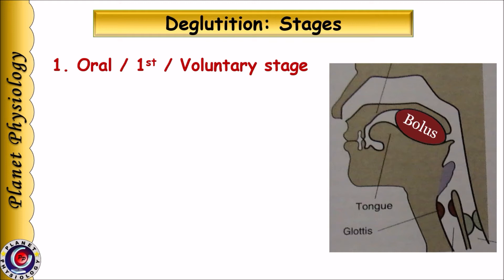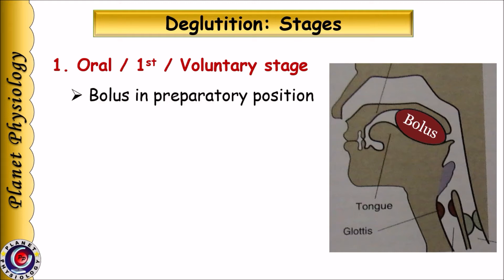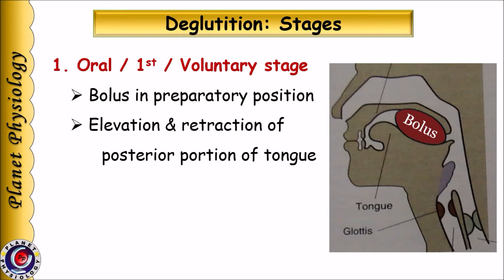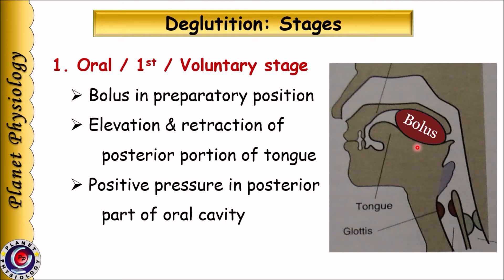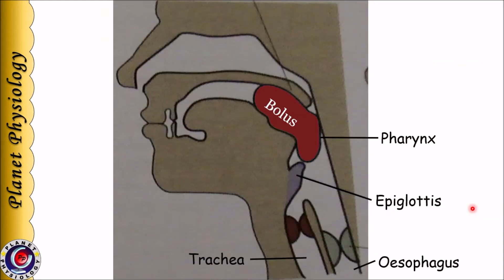As the name suggests, this stage is voluntary in nature — we can decide when to swallow the food. Whenever food is ready to swallow, it is kept in preparatory position towards the posterior aspects of oral cavity. Then the tongue is elevated and retracted, creating positive pressure in the posterior part of oral cavity, and the bolus is pushed into the pharynx. As you can see in the picture, the bolus moves from the oral cavity into the pharynx.